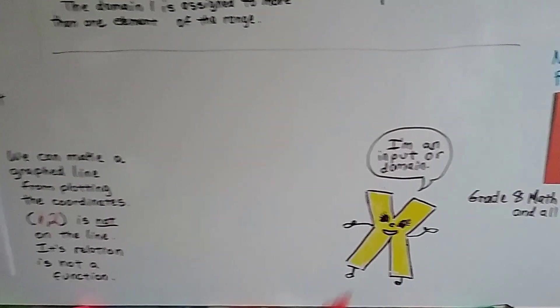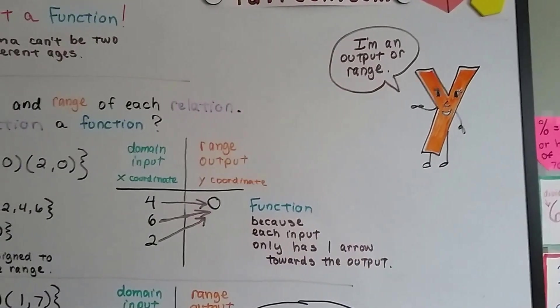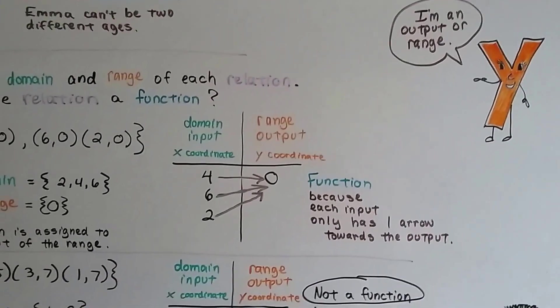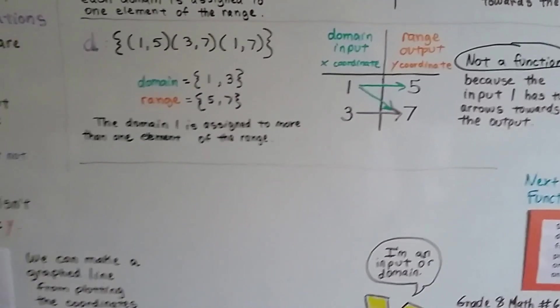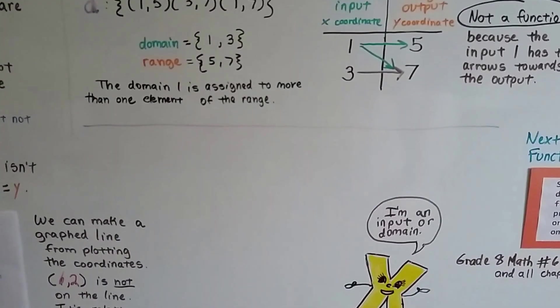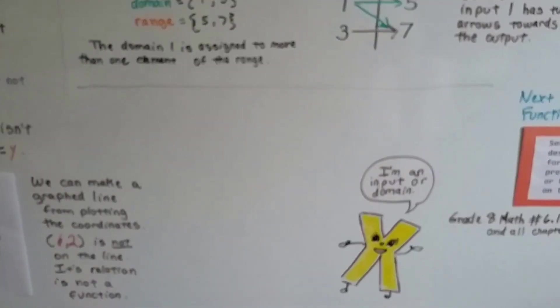So, remember that for X coordinates, that's the input or the domain. And, for the Y coordinates, it's an output or range. So, just because it says X or Y doesn't mean that that's necessarily the domain or range though. It could be A or B, right? It could be C or D. It could be P and Q.